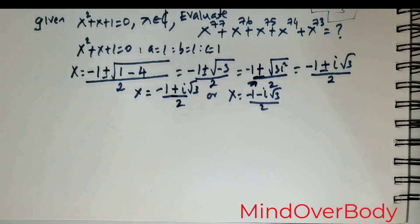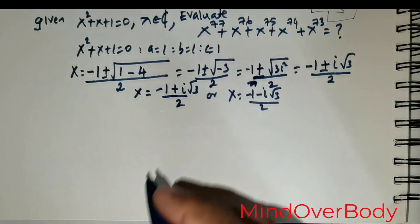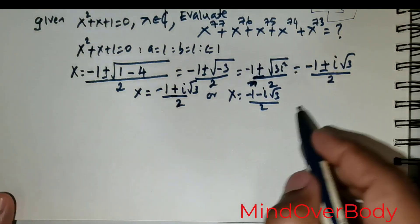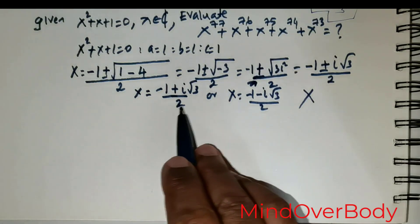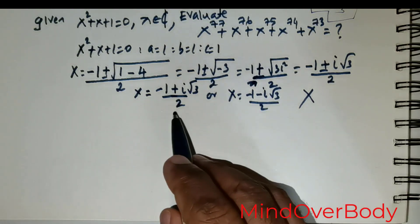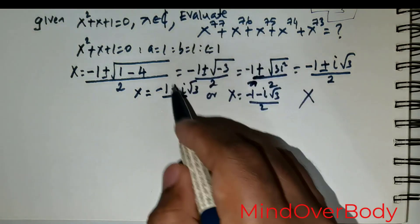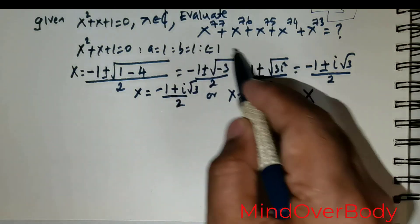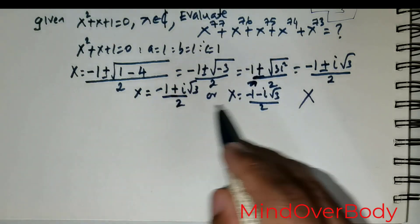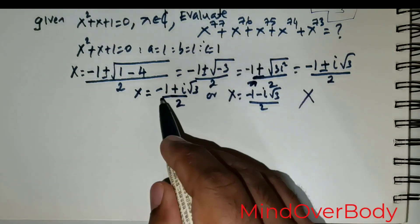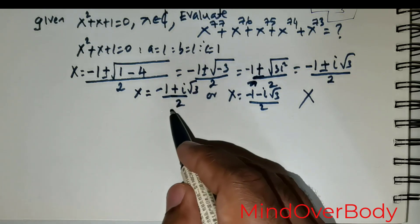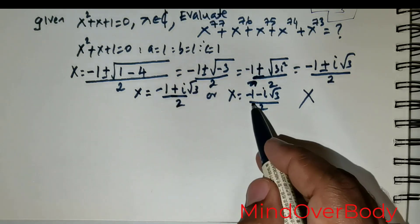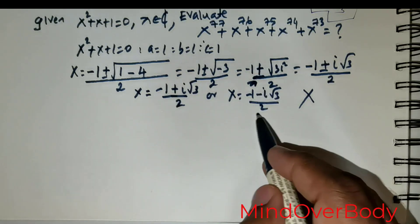So you get x equals negative 1 plus i times root 3 over 2, or x equals negative 1 minus i times root 3 over 2. What most students would then do is say this looks very complex, so they drop it — but that is a big mistake. They need not drop these values; all they need to do is continue and use the values of x.